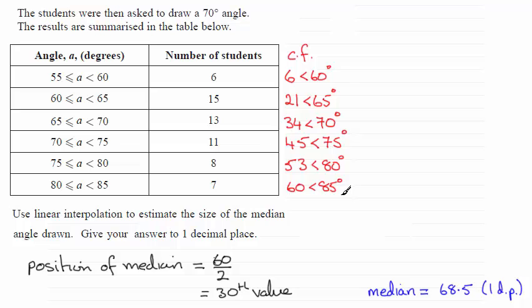Now, we're looking for the 30th value. And that's going to be in this class here, this 65 to 70 class interval. Because we know that 34 are less than 70 degrees here. So I'm just going to illustrate that by ringing that. So we know the median is in this interval.